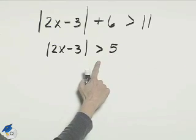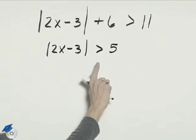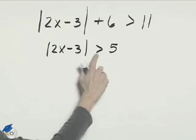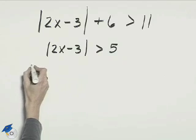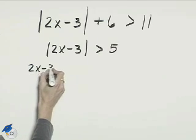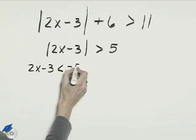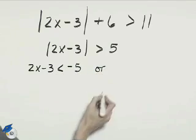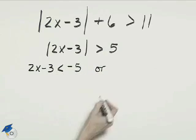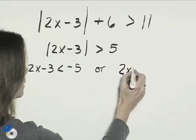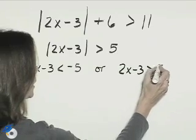Now we need to set up two inequalities to solve. Because we have this greater than symbol, one of the inequalities will be 2x minus 3 is less than negative 5, and that's joined with the union, or 2x minus 3 is greater than 5.